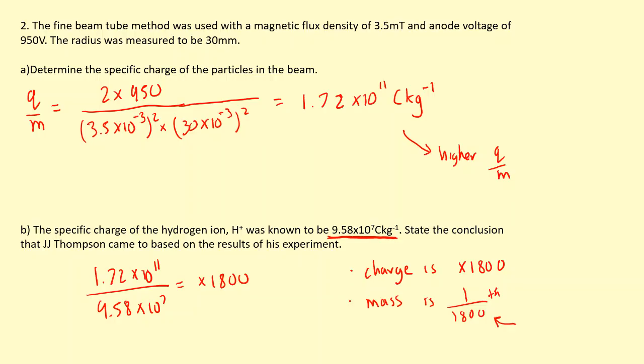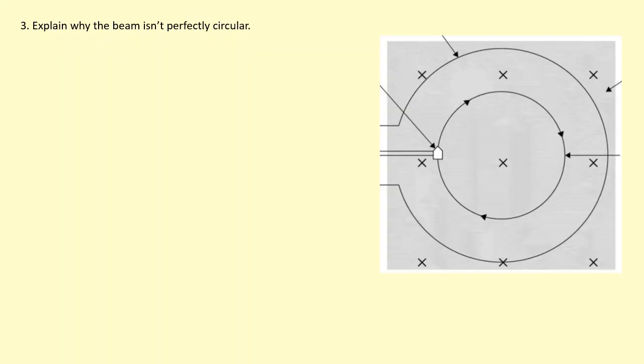The beam form isn't a perfect circle. The radius is actually going to decrease as it goes around.